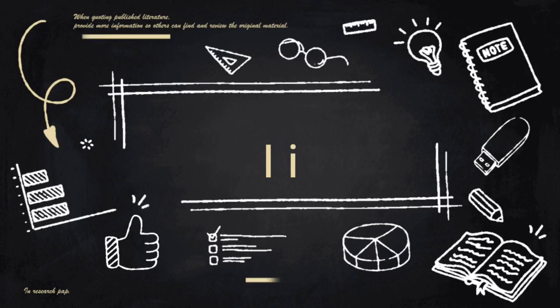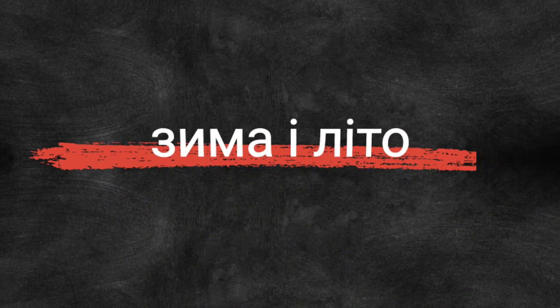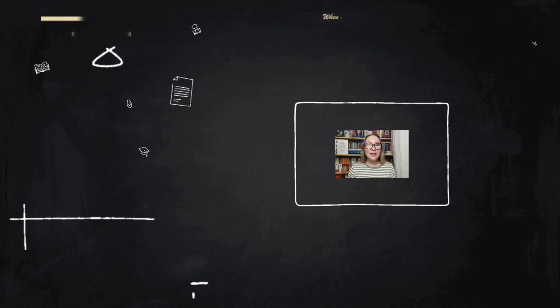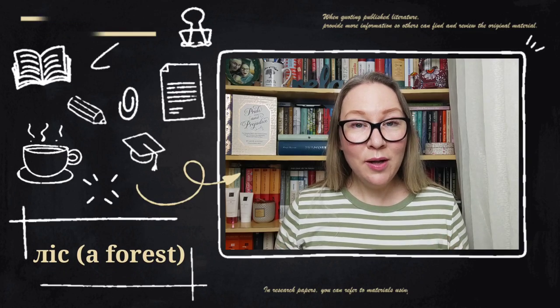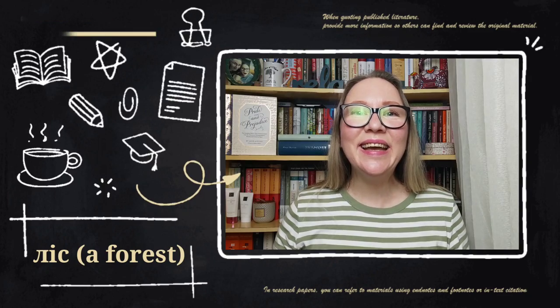The next letter is І, and it's pronounced like the English double E — like «sweet», «sea». It's also a very useful word by itself — «і» means «and» in Ukrainian. For instance, «зима і літо» — winter and summer. When І follows a consonant, that consonant starts to sound soft — «ліс» — a forest. Ukrainians also say «і» when surprised, disappointed, or to express reluctance.